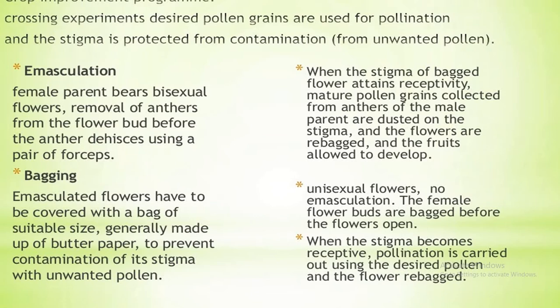The first method is emasculation. In emasculation, the anther is removed from the bud before it dehisces using a pair of forceps. It is mainly done when the female parent bears bisexual flowers. The second process is bagging. The emasculated flower is covered by a bag of suitable size, generally made of butter paper, to prevent contamination of the stigma by unwanted pollen grains. When the stigma of the bagged flower becomes receptive, the collected pollen grains are dusted onto the stigma. The flower is re-bagged and the fruits are allowed to develop.